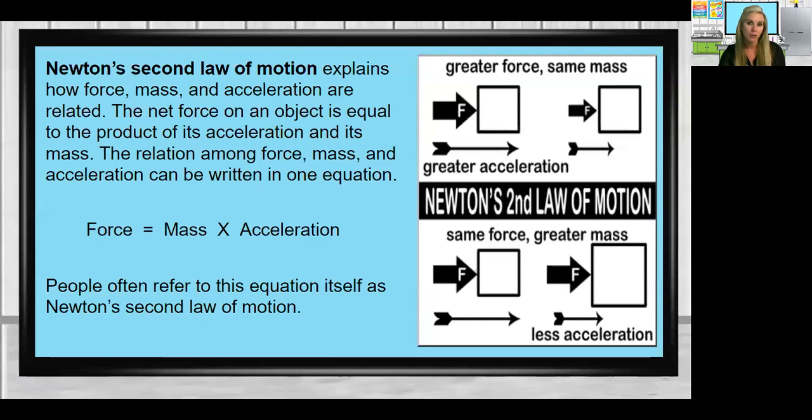When we're talking about calculating force we're really talking about Newton's second law of motion. Newton's second law of motion explains how force, mass, and acceleration are related. The net force on an object is equal to the product of its acceleration and its mass. The relation among force, mass, and acceleration can be written in one equation: Force equals mass times acceleration. People often refer to the equation itself as Newton's second law of motion.